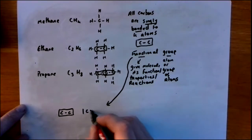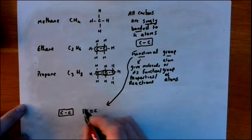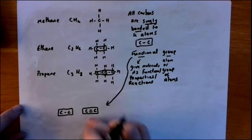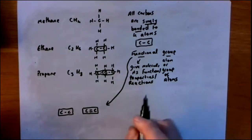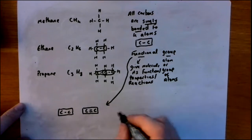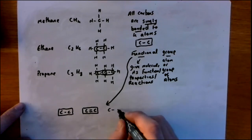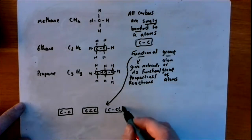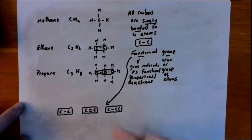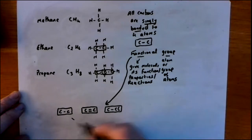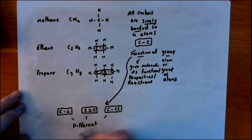Other functional groups: we can also have carbons doubly bonded to carbon. Any molecule which has a carbon doubly bonded to carbon has a different functional group than the alkanes — these get a different name, they're not called alkanes. We can also have carbon bonded to a chlorine, which is a different type of functional group called a chloroalkane. These three things are different functional groups.